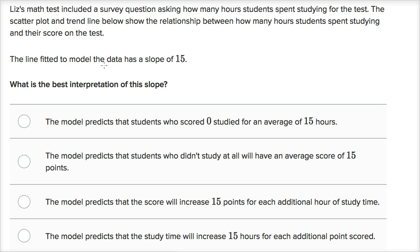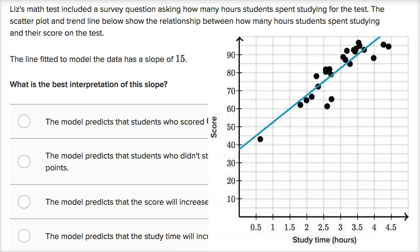The line fitted to model the data has a slope of 15. So the line that they're talking about is right here. This is the scatter plot. This shows that some student who spent some time between half an hour and an hour studying got a little bit less than a 45 on the test. This student here who got a little bit higher than a 60 spent a little under two hours studying. This student over here who looks like they got like a 94 or a 95 spent over four hours studying.